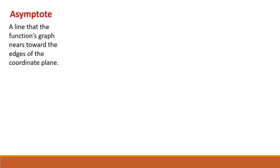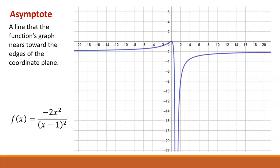An asymptote is a line that a function's graph nears toward the edges of the coordinate plane. Let's look at this function, f of x equals negative 2x squared over the quantity x minus 1 squared, and identify where its asymptotes are.